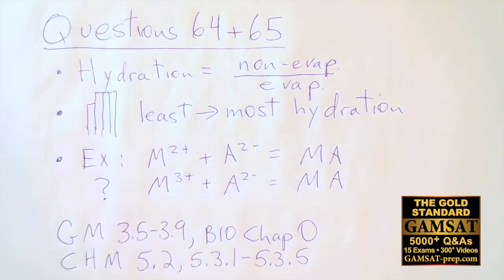So question 64. The question is asking for dental cement with a trivalent metal and with a divalent anion. So this is what we're going to try to figure out, but first of all let's go back to the example that Acer provided.